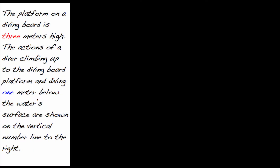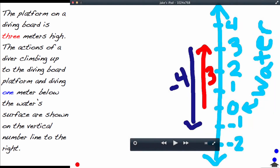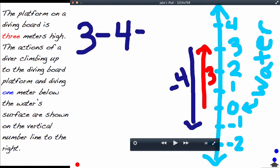The platform on a diving board is three meters high. The actions of a diver climbing up to the diving board platform and diving one meter below the water's surface are shown on the vertical number line to the right. The three represents the diving board — from zero, the diver comes up three meters. He dives off and lands one meter under the water. The zero represents where the water is. We can represent this in a subtraction sentence: three minus four equals negative one.